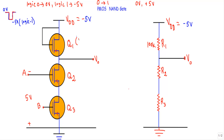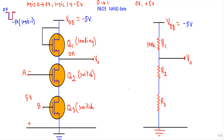Transistor Q1 is known as the loading MOSFET, and it will always be in the ON state. Its channel provides a resistance of around 100 kΩ when in the ON state, and we fabricate Q1 such that its ON state resistance is around 100 kΩ. Transistors Q2 and Q3 are known as switching MOSFETs — they turn OFF with logic zero and ON with logic one (minus five volts).